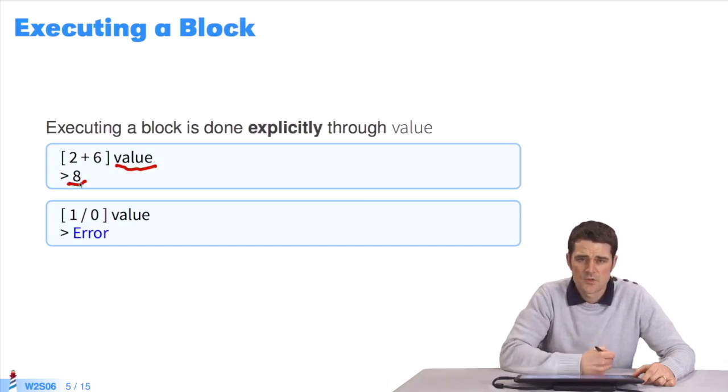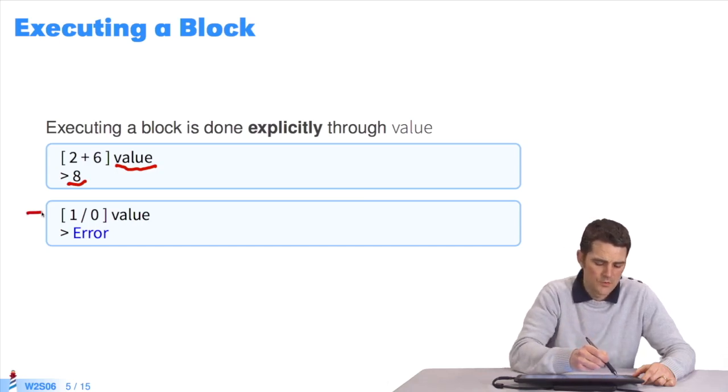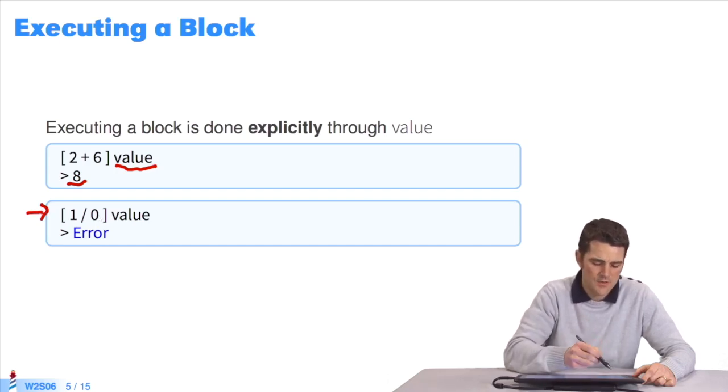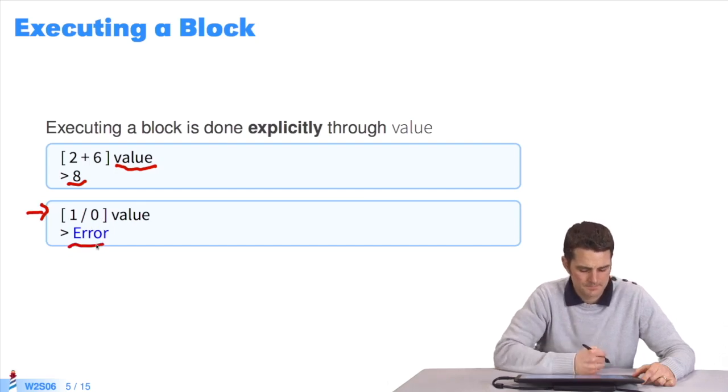However, if the block contains erroneous expressions, the error is returned when the block is evaluated. As in example 2: open bracket 1 divided by 0 close bracket. I send the message value to the block. It returns an error.